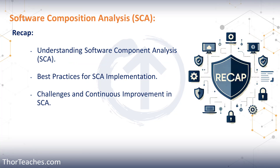Let's recap. In this lecture, we talked about Software Component Analysis — SCA — the process of identifying and analyzing open source and third-party components used in our software applications. We started with an analogy comparing software development to cooking, where the quality of the ingredients — the code components — greatly impacts the final product. Modern software is often assembled from proprietary code, commercial off-the-shelf software, and open source libraries, enabling rapid development but introducing risks related to security vulnerabilities, license compliance, and outdated versions. Key benefits of SCA include early risk detection, continuous monitoring, license compliance, and dependency management.